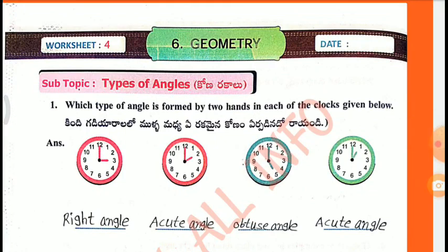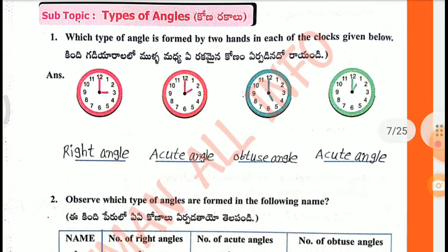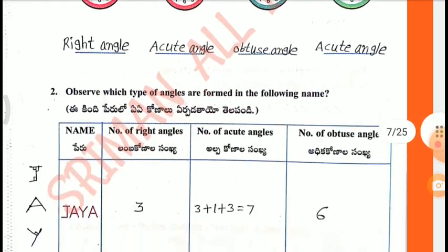Worksheet 4, Types of Angles. First question: Which type of angle is formed by two hands in each of the clocks given below? In the first clock, a right angle is formed. In the second clock, an acute angle is formed. In the third clock, an obtuse angle is formed. In the fourth clock, an acute angle is formed.